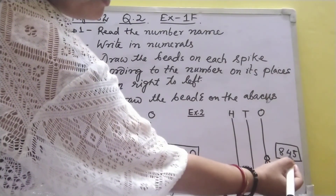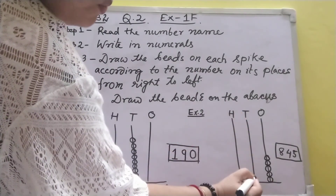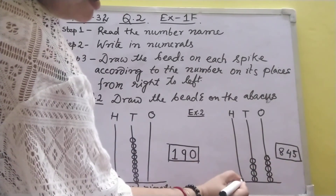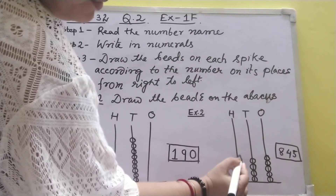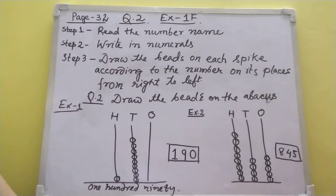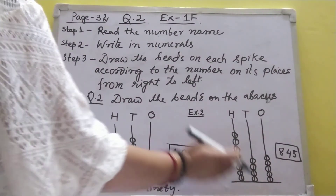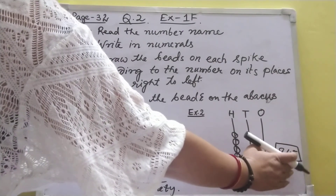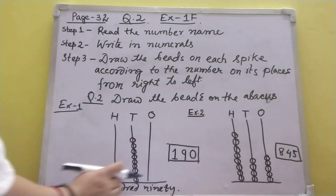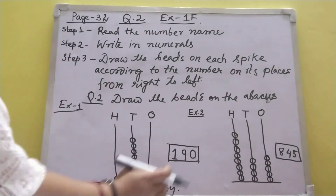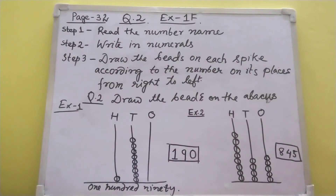In hundreds place: 8, so draw eight bits. Same way, it is the simpler case because the numbers are already given — you just draw the bits according to the numbers. If a number name is given, you must do one extra step: write the numerals first, then draw the bits. I think it is clear, children.